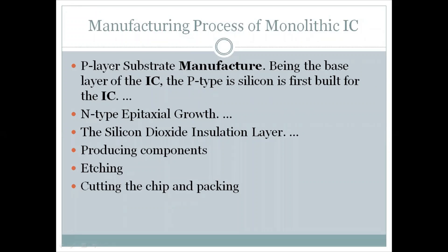The first step is P-substrate layer manufacturing. The second step is epitaxial N-layer. The third step is insulating layer. The fourth step is producing components. Next is etching components. Next step is cutting the chips and packing. This is the manufacturing of monolithic ICs.